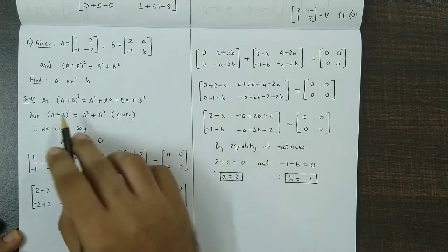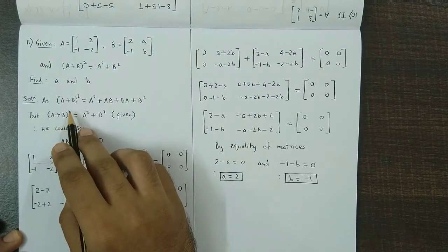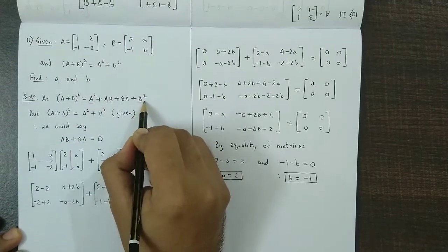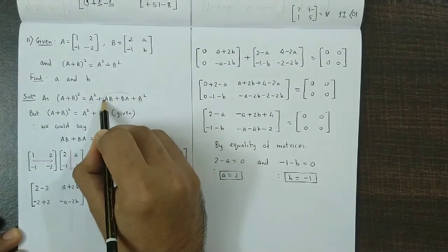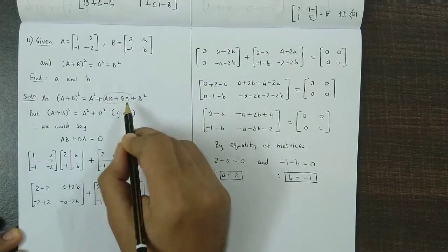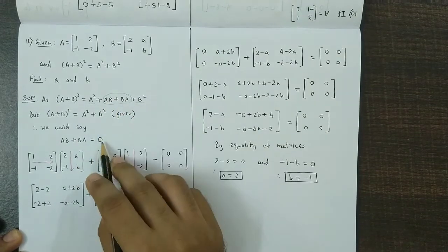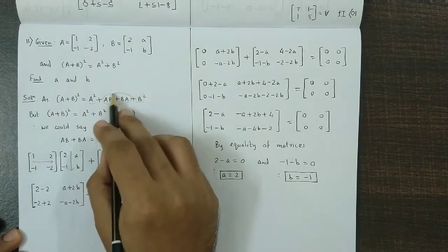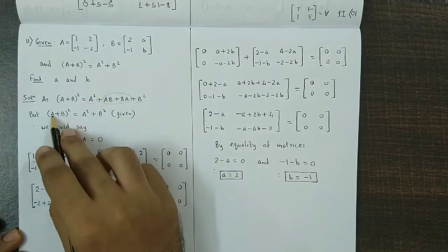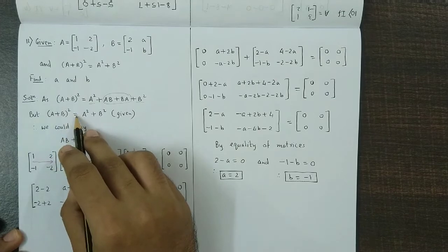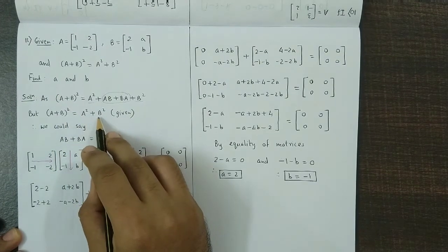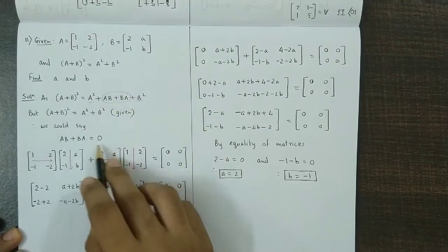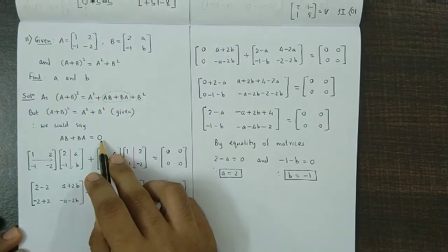However, we have been given that (A+B) squared equals A squared plus B squared — just these two terms. So we conclude that AB plus BA must be a zero matrix, which makes (A+B) squared equal to A squared plus B squared.